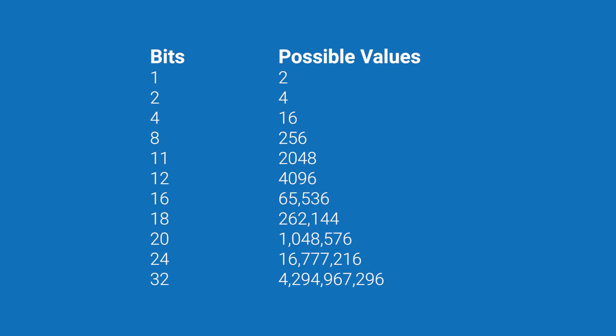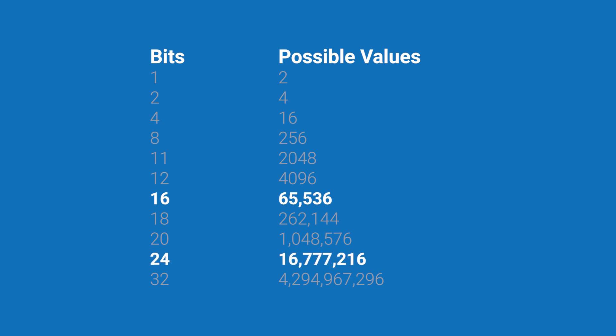A 1-bit audio signal is either a 1 or a 0, or on or off, whereas a 2-bit audio signal would have 4 discrete values. In our audio, that would translate to full, medium, quiet, and off. Because bits work exponentially, a 16-bit audio signal has 65,536 values, and a 24-bit audio signal has 16,777,000 values.